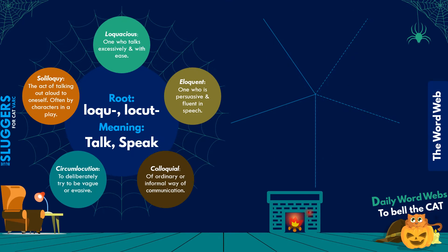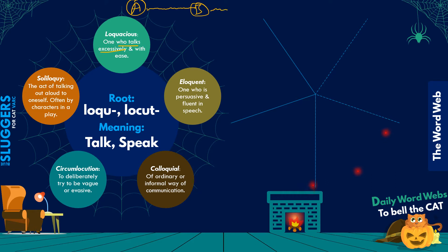At some point in your life you must have come across a person who can talk with great ease — and not just with ease, but also excessively. If you get them started on topic A, they'll talk for at least four to five minutes and then drift to topic B on their own. These people can be considered quite loquacious — talking excessively and with ease. It can have a negative or a positive connotation depending on how you use it.